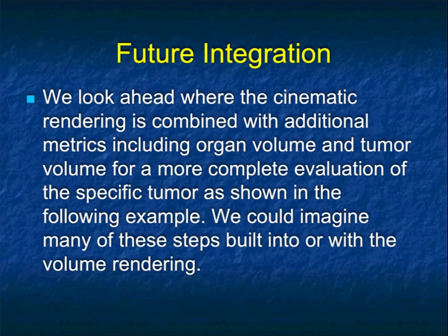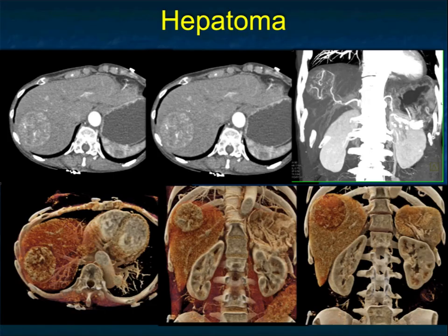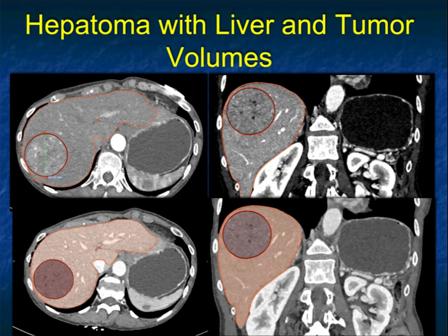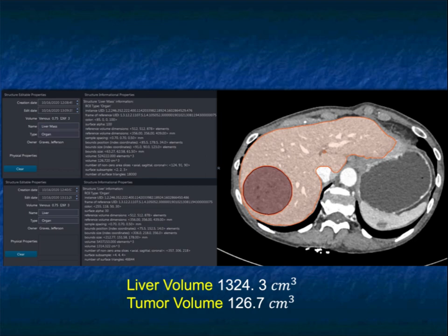Now in the future, I really believe there will be more integration of information. One of the things that AI demands is more information — saying the patient has a liver mass that's 5 cm is great, but all of these things can be built into volume rendering. Looking at a large hepatoma showing the axials, the MIP, and the cinematic from arterial and venous phase, the computer can draw the boundaries of the liver and the tumor and calculate both liver and tumor volumes. This becomes very important in terms of planning surgery, and it goes across many different applications.